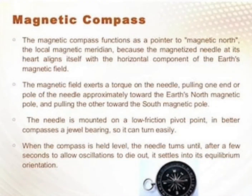Magnetic compass — magnetic compass क्या करती है? Magnetic compass points to magnetic north, the local magnetic meridian, because the magnetized needle at its heart aligns itself with the horizontal component of the earth's magnetic field. The magnetic field exerts a torque on the needle, pulling one end or pole of the needle approximately towards the earth's north magnetic pole and pulling the other towards the south magnetic pole.